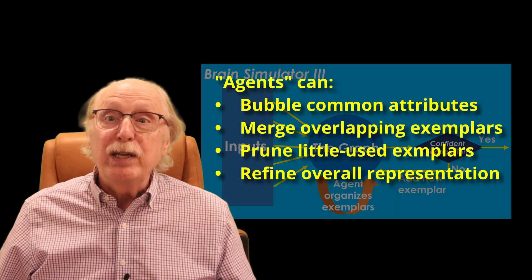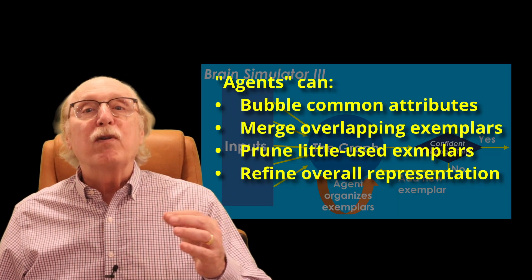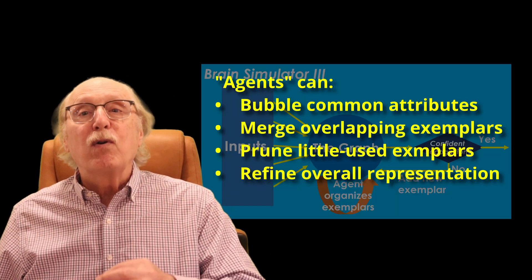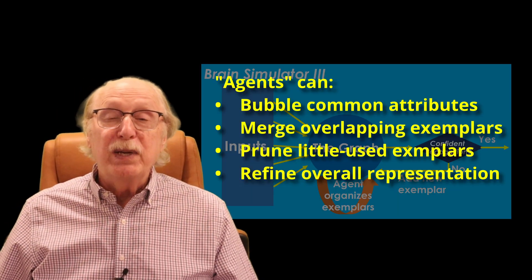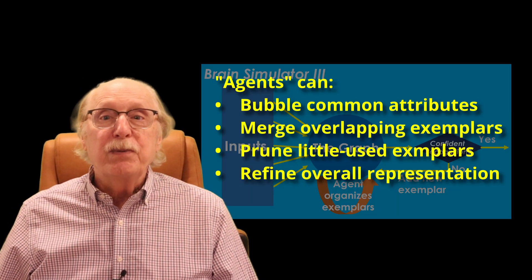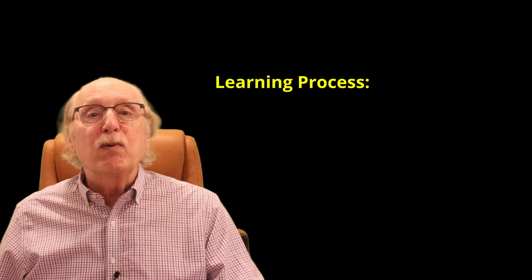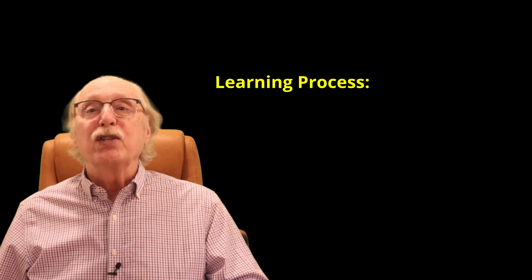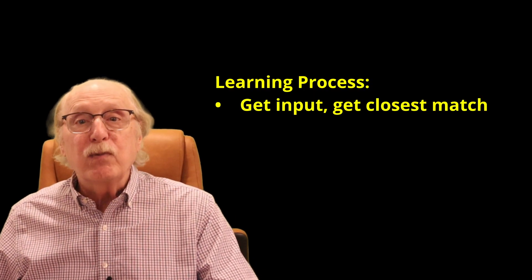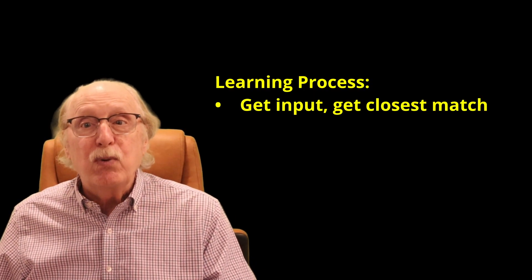They can prune away rarely used ones and refine the overall representation so it remains efficient. Before adding more detail, let's summarize the simple learning process. The brain receives some input and searches for a closest match among its library of stored patterns.